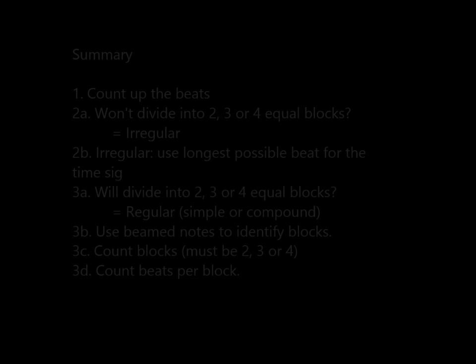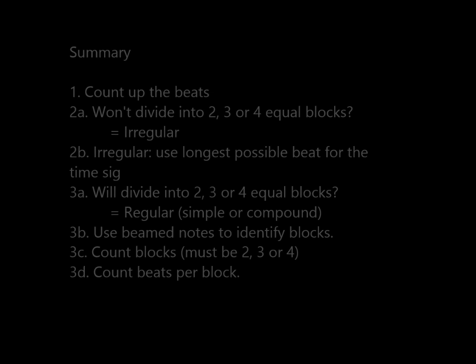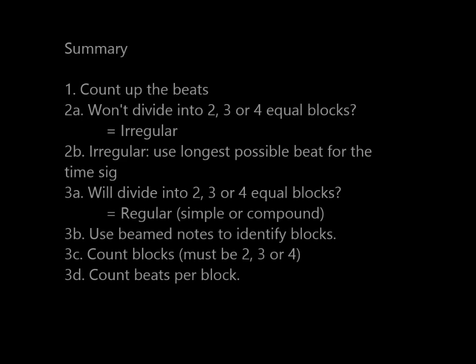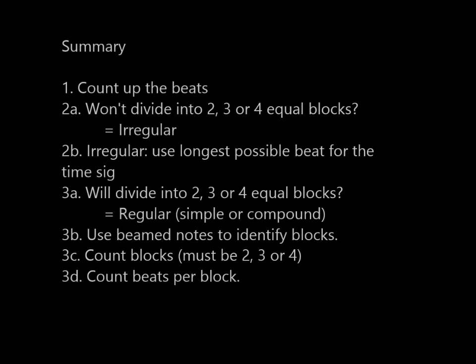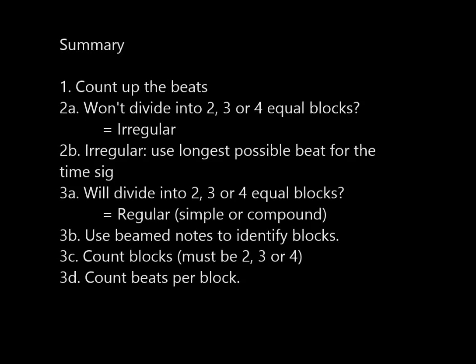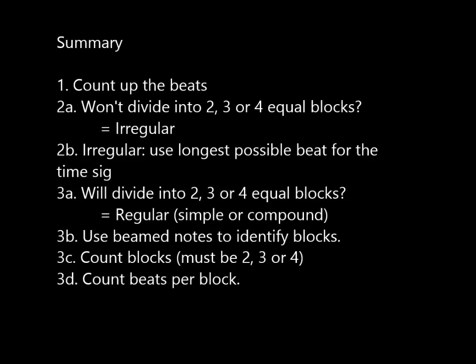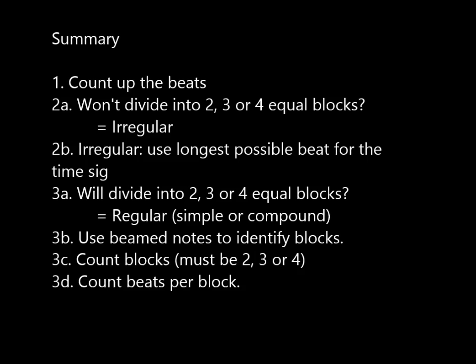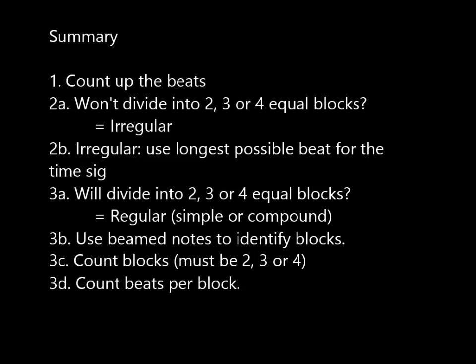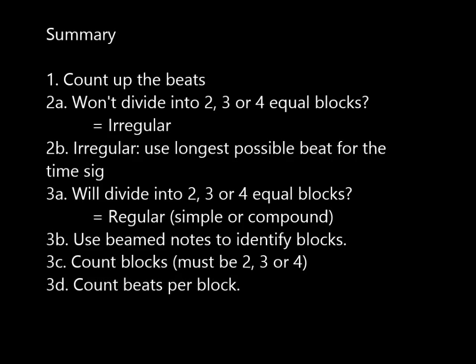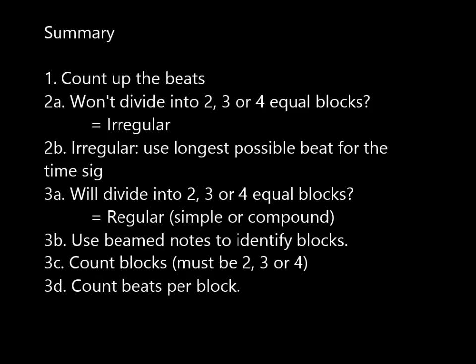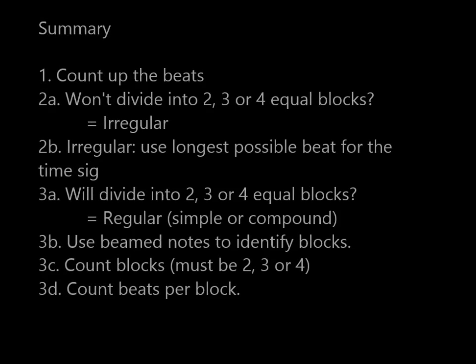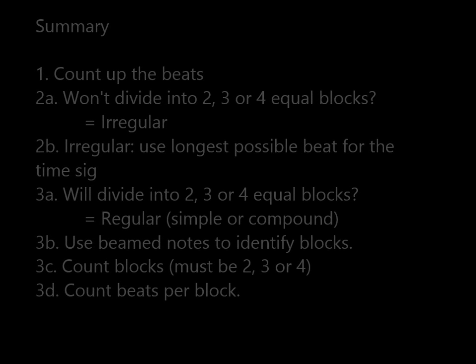And now here's a summary of everything we've covered in this video. To work out the time signature the first thing you need to do is count up how many beats there are in the bar. Next, check whether that number will divide equally into two, three or four. If it doesn't you're looking at an irregular time signature. If the time signature is irregular you need to use the longest possible beat for the time signature lower note. If the number of beats in the bar does divide into two, three or four equal blocks then you're looking at regular time which could be simple or compound. Use the beamed notes to identify blocks. Count up the blocks per bar. There must be two, three or four blocks per bar. Then count how many beats there are per block and work out the time signature from that.